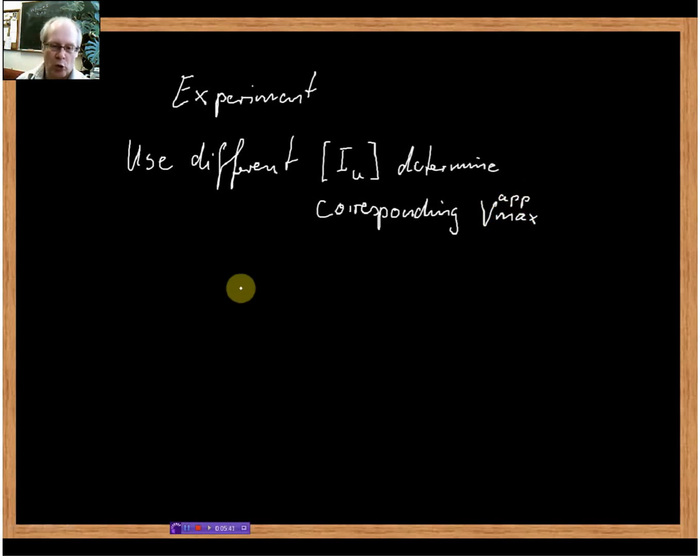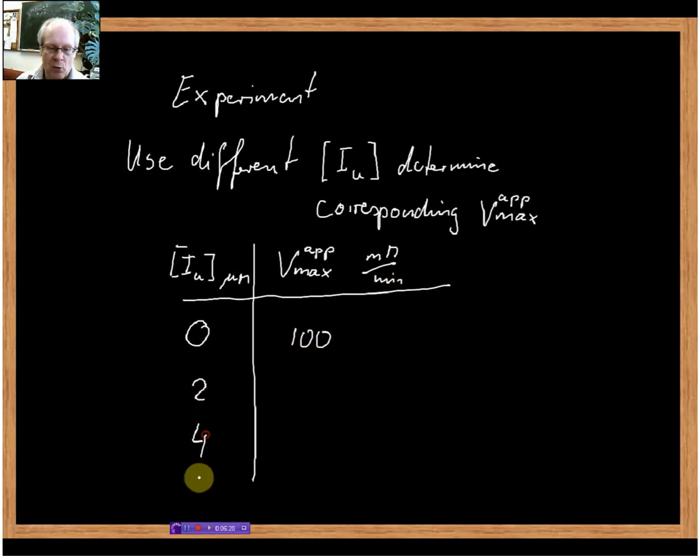What we get is a table with inhibitor concentration in micromolar and the measured Vmax apparent. Without inhibitor, that would be our original Vmax - for example, 100 millimolar per minute. At 2 micromolar inhibitor we might get 80, at 4 we get 60, at 6 we get 40. We see that Vmax apparent goes down the more inhibitor we add to our reaction.